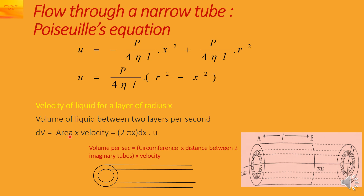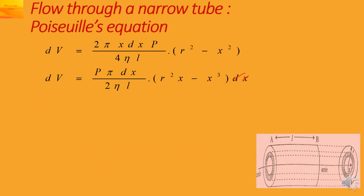So the area is 2 pi x dx and velocity is u, giving dV equal to 2 pi x u dx. Substituting u, dV equals 2 pi x dx upon 4 eta L into P into R squared minus x squared. Multiplying x into the bracket gives R squared x minus x cubed, and 2 times 2 is 4, so dV equals P pi dx upon 2 eta L into R squared x minus x cubed.